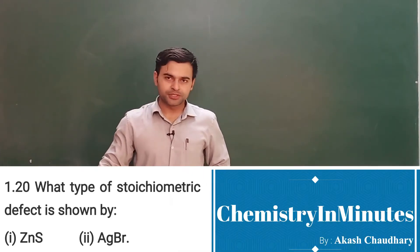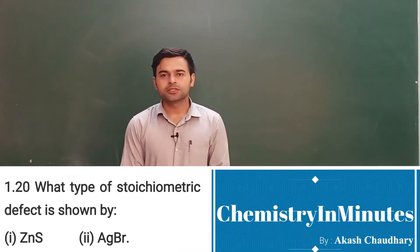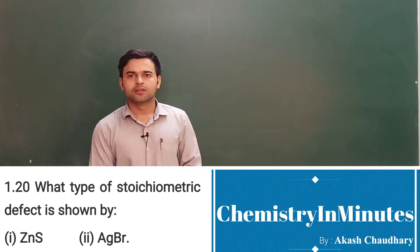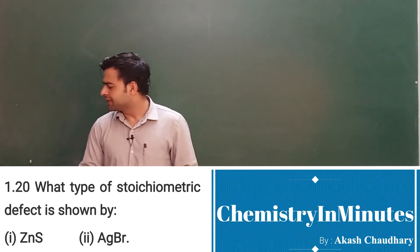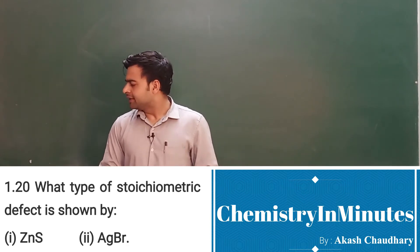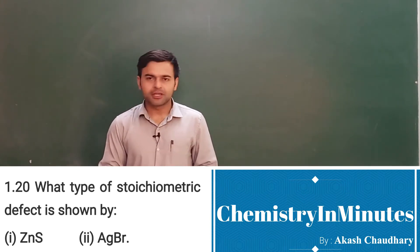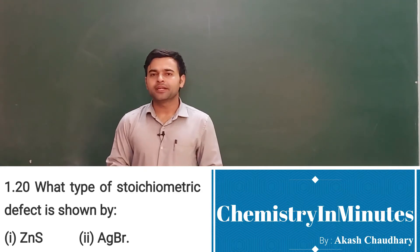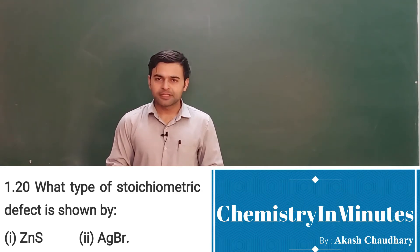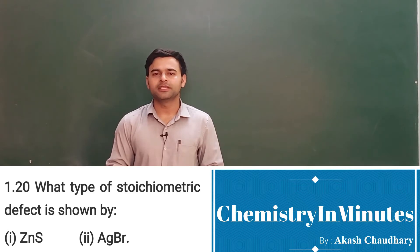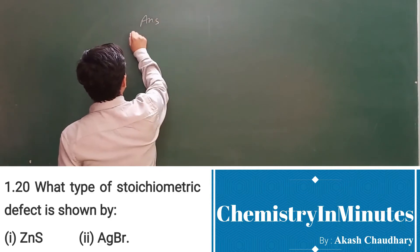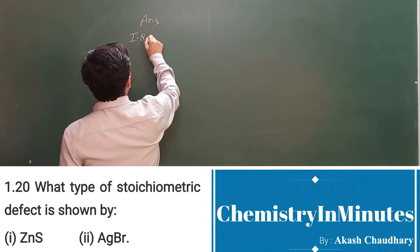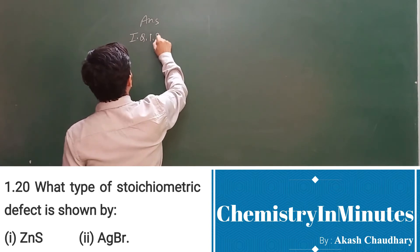The question now appearing on your screen is in-text question 1.20. The question is: what type of stoichiometric defect is shown by zinc sulfide, and second, by AgBr? We have to write the defect shown by these solids. Let's write the answer.